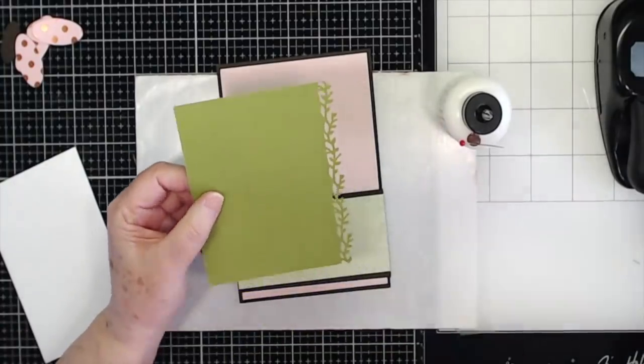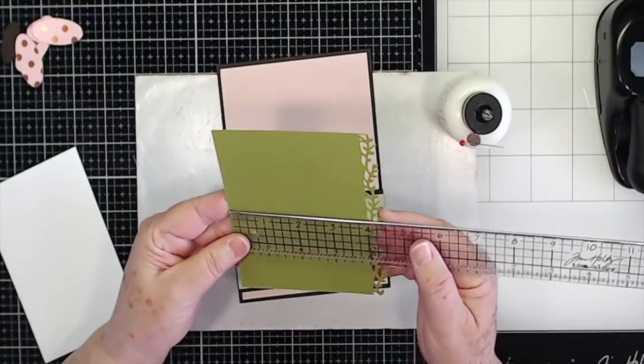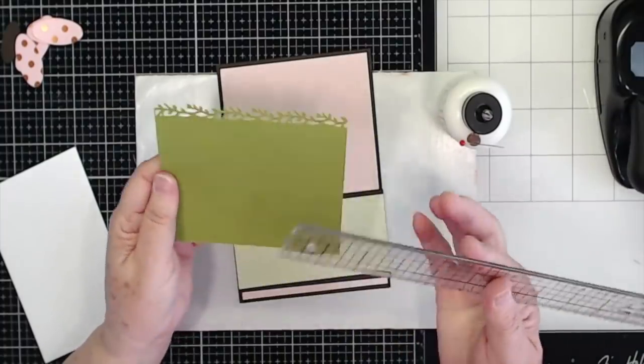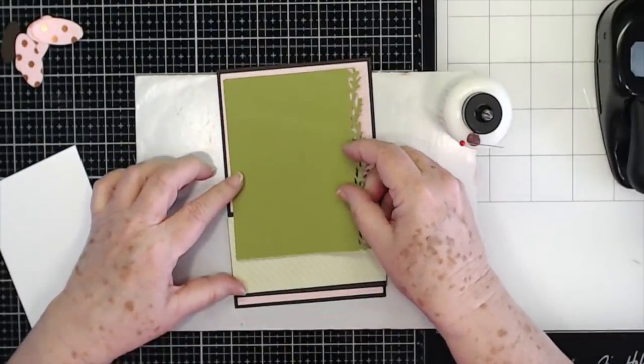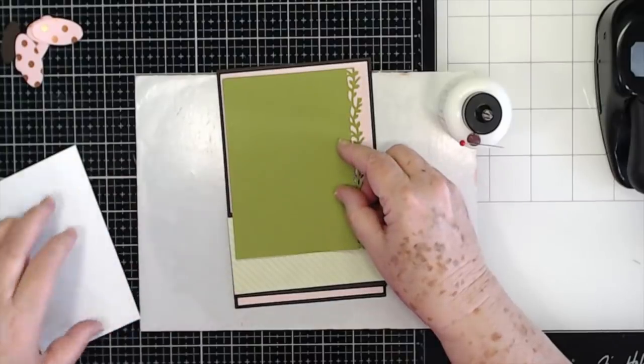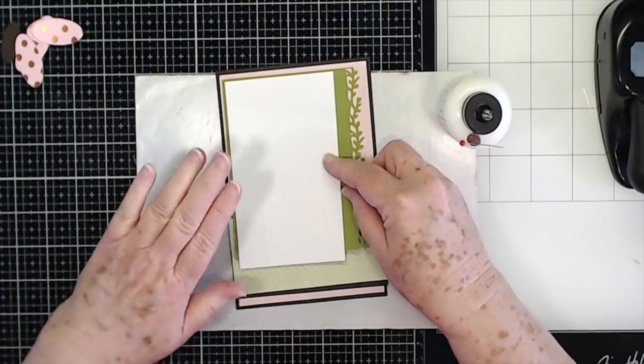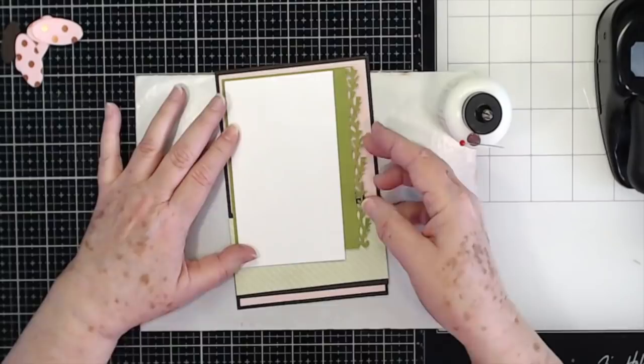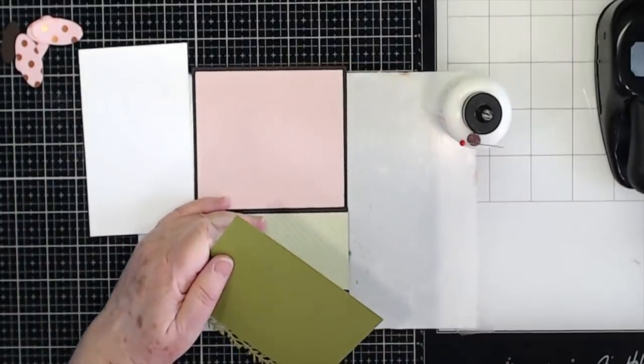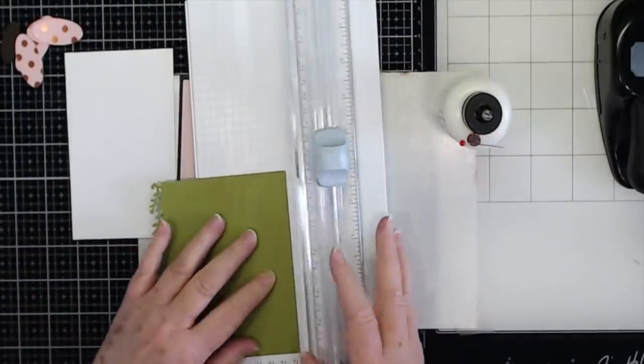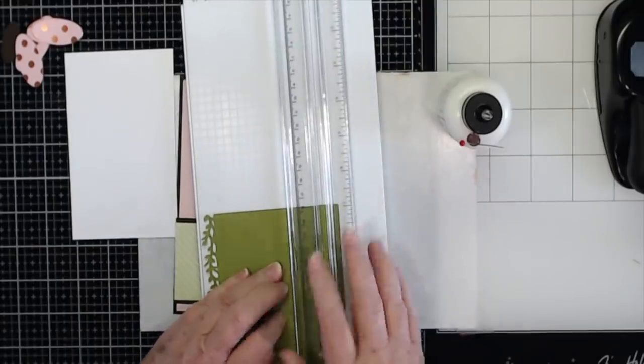And then I have a piece that was cut and I didn't even cut it down, it was already cut to the width. This was four and a half by five and a quarter. Now the five and a quarter is going to be a little bit short to go down through here, as you can see it's a little bit shorter than the white. But we're not going to worry about that. I'm going to trim this side off just about a half of an inch.